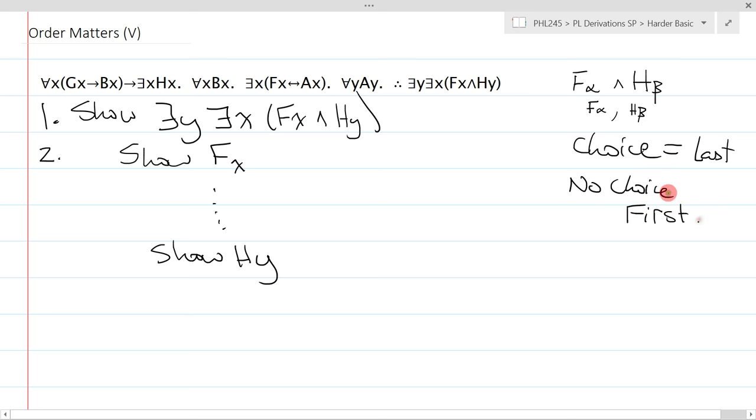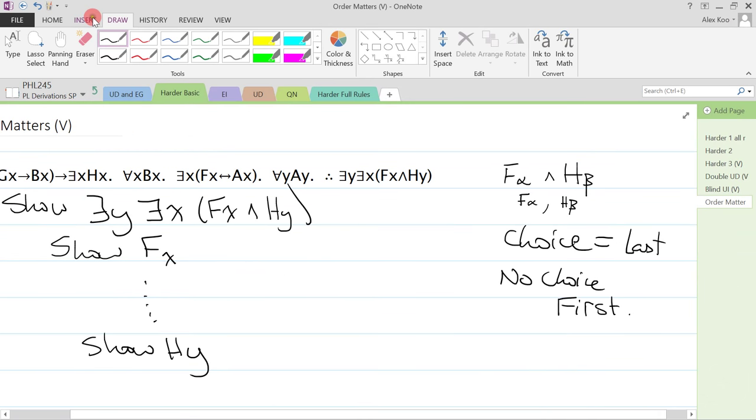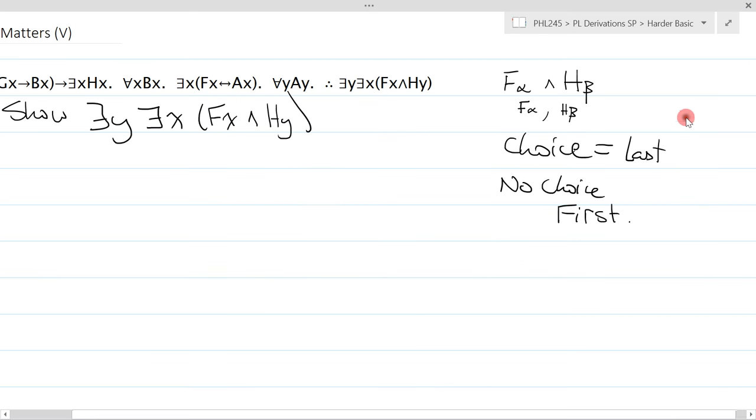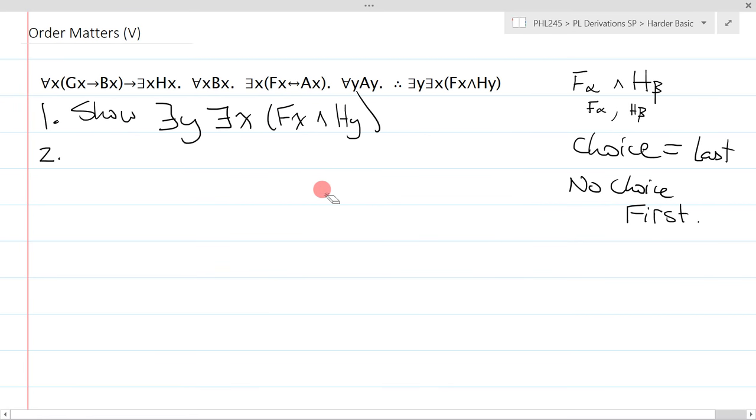And when you have no choice, you always do it first. And this is really important. So if you want to try and see what happens afterwards, if you try show f(x), show h(y), you will realize that you actually can't solve it. If you do solve it, it means you cheated. So we'll get rid of that. We'll go back.